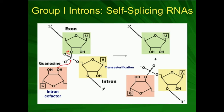The intron region is going to fold in such a way — remember that introns, like all RNA parts, have a secondary structure; they're not just long linear chains — that makes this phosphate exceptionally activated for attack by guanosine. The 3' hydroxyl of this intron guanosine cofactor is going to attack the phosphate right here. You get a phosphoryl substitution, and the exon region essentially leaves as a leaving group. Now the intron cofactor is covalently bonded to the rest of the intron. We basically substituted the exon for the intron cofactor guanosine.